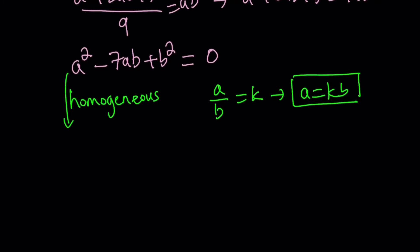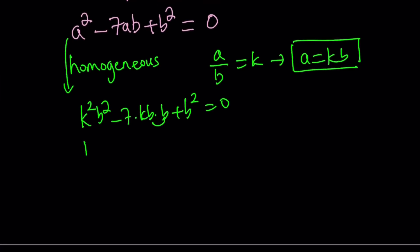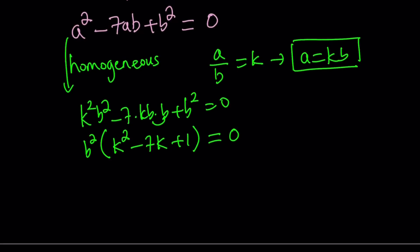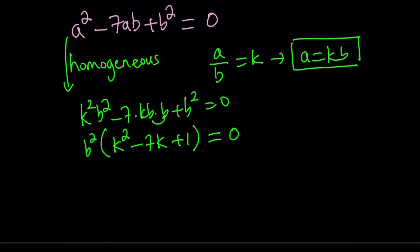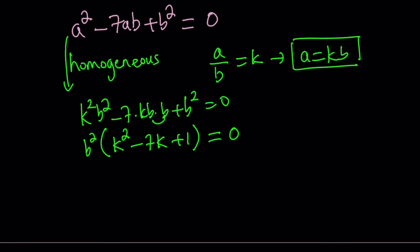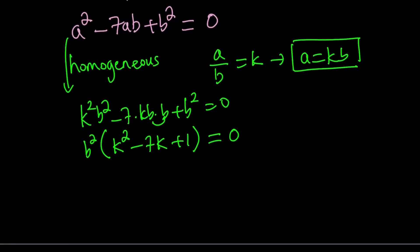Let's do it. Replace a with kb: k^2*b^2 - 7*kb*b + b^2 = 0. And now b times b is b^2. So we can take out b^2. And inside the parentheses, we get k^2 - 7k + 1 = 0. This is what makes it a homogeneous equation. As you can see, as soon as we made the replacement, we were able to take the b^2 out. And inside the parentheses, we only have a single variable. That's what is really cool about this.